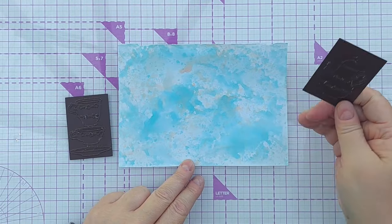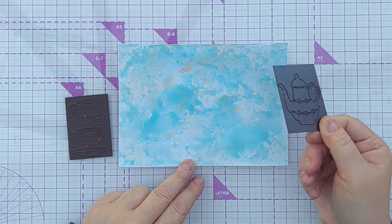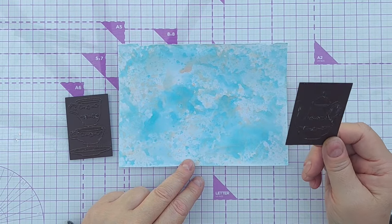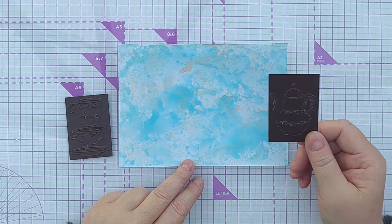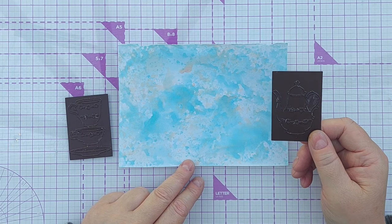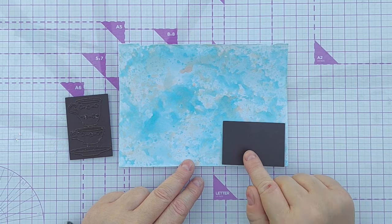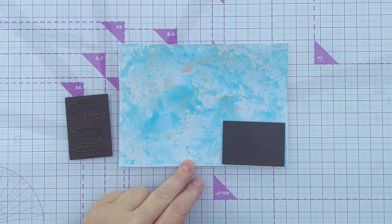Now I'm going to use this to die cut my coffee pot and cups and saucer but I'm going to cut multiple because I want to do some layering up of my die cuts so they get a really dimensional look. So I do want three pots and two of each of those.